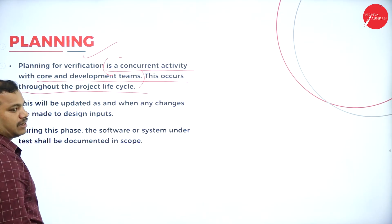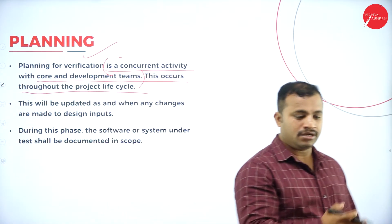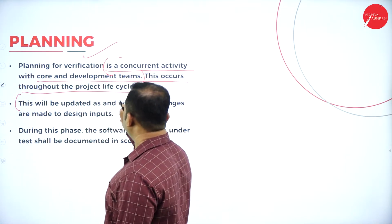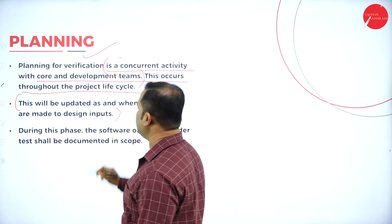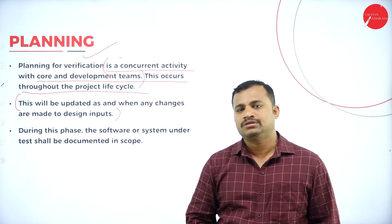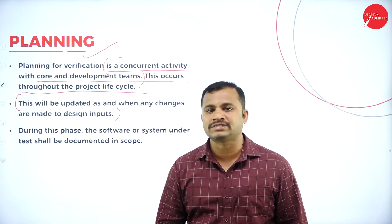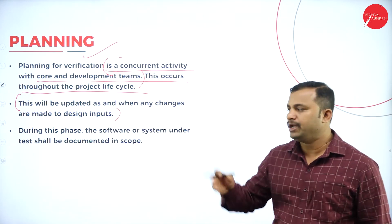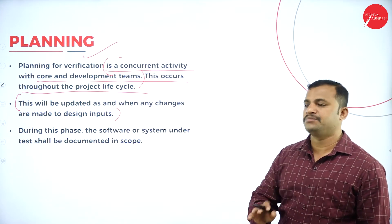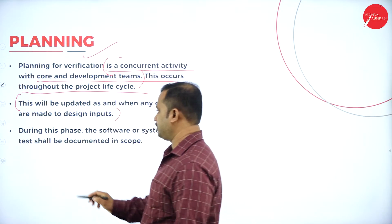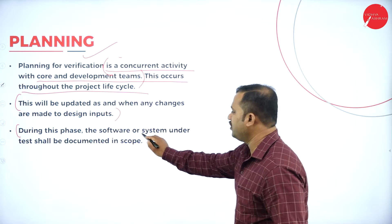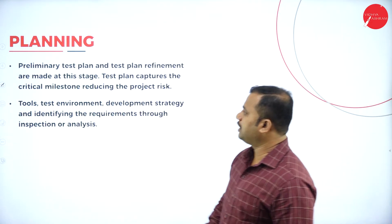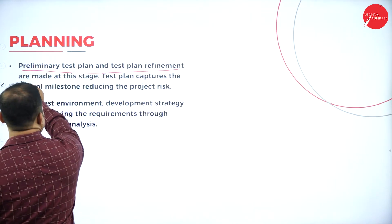This occurs throughout the project life cycle, right from the analysis to the testing phases. It will be updated as and when any changes are made to the design inputs. This process is repeated in a cycle to understand that all requirements are met by the developer. The software or system under test will be documented in scope, and preliminary test plan and test plan refinement are made at this stage.